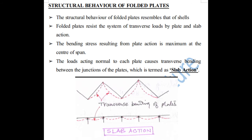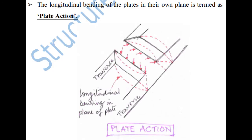As I have told you earlier, folded plates resist the system of the load by the plate and the slab action. Plate action is the longitudinal bending of the plate in their own plane, as shown in the diagram. So the takeaway is: plate action is the longitudinal bending and slab action is the transverse bending.